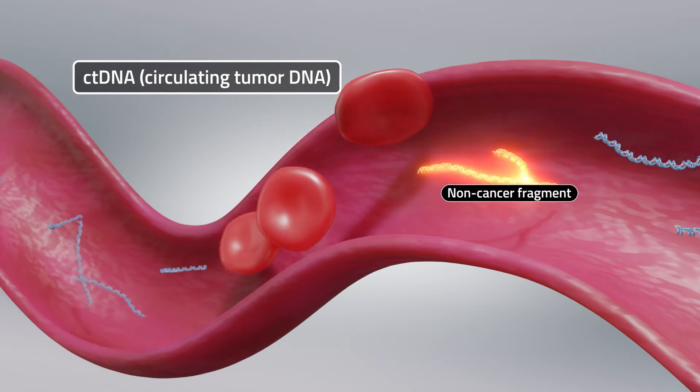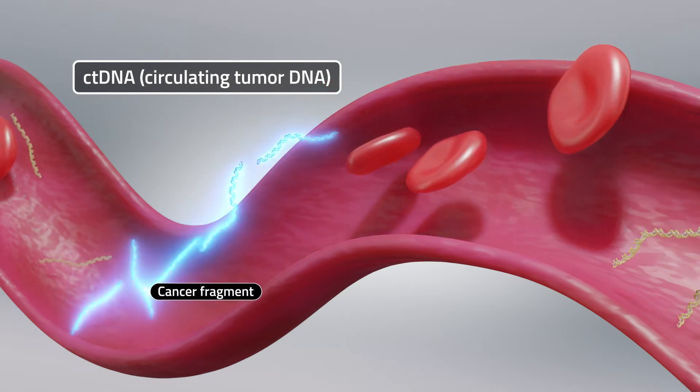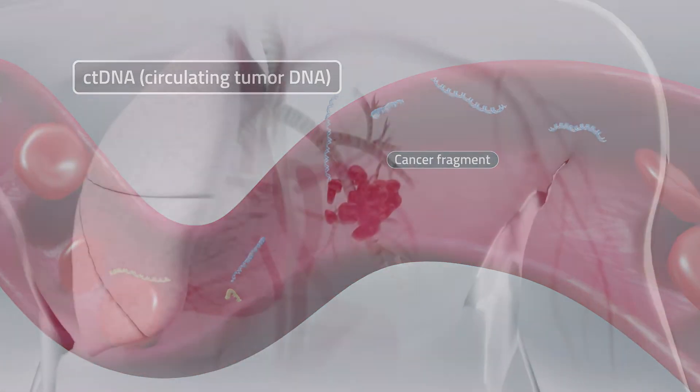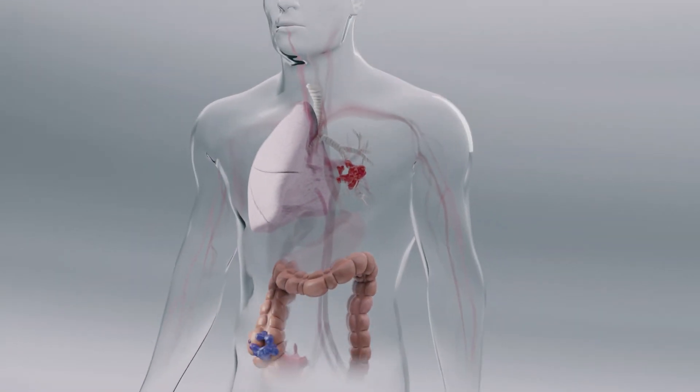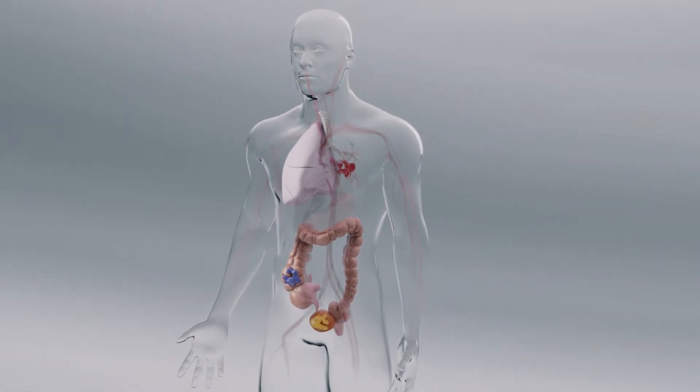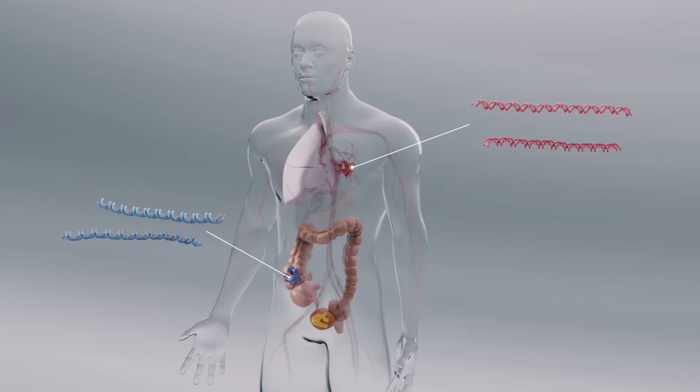The fragments specifically derived from cancer cells are called circulating tumor DNA. Circulating tumor DNA fragments have unique genetic alterations based on the tumor from which they originate.